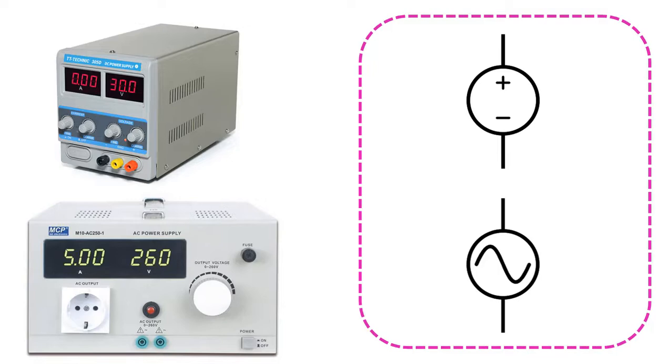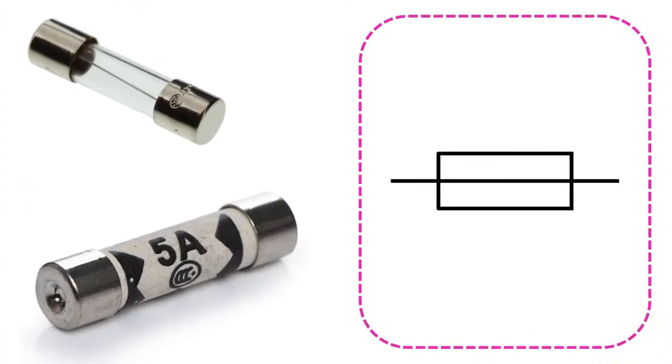This symbol is generally used for fuses that protect circuits against high current. The current values that can provide maximum protection are written on them. If the current flowing through it exceeds a certain value, it explodes or melts, providing safety.